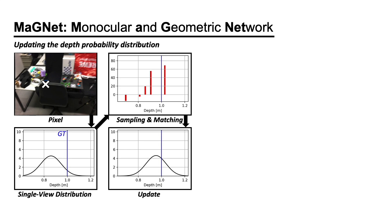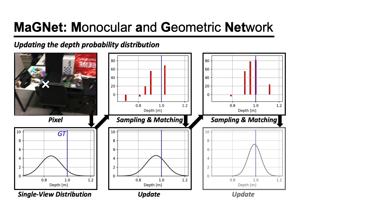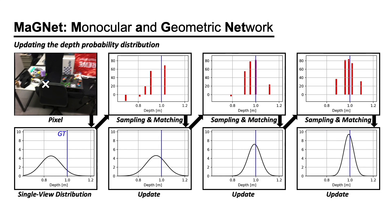To obtain higher accuracy, we can repeat this process by sampling another set of depth candidates from the updated distribution. As we repeat this process, the distribution becomes more accurate and more certain about its prediction.